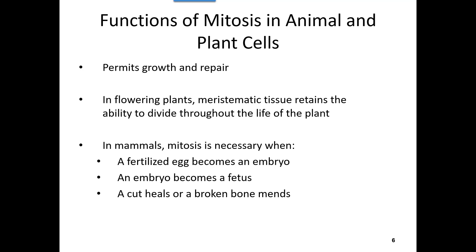The functions of mitosis are primarily growth and repair. We need to grow larger and repair tissue. In flowering plants, different tissues retain the ability to divide throughout their entire life, so they keep growing larger. Humans grow to their optimal size in their late teens to early twenties, but we still need mitosis for repair — healing cuts, broken bones — and to provide correct, undamaged cells. We need mitosis when a fertilized egg becomes an embryo, then a fetus, then through all growth to adulthood, and then to heal any damaged tissue.